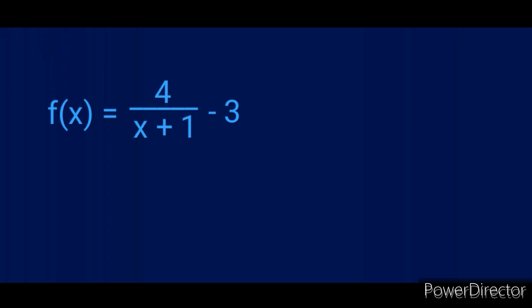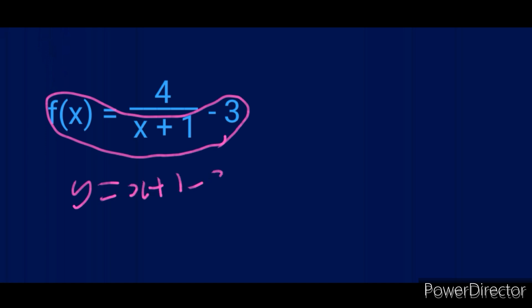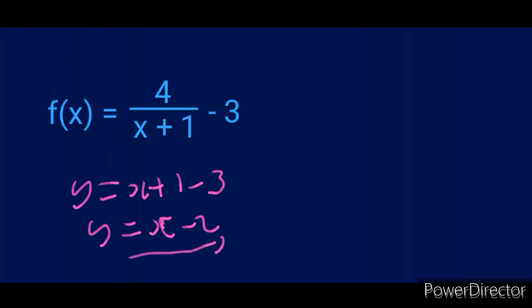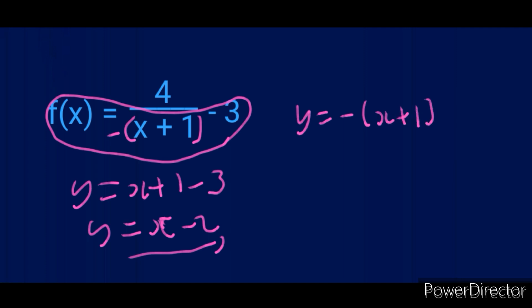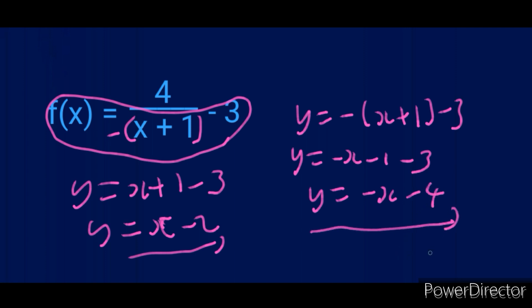Here is another example. They say find the equation of the axis of symmetry — the one with the positive gradient and the one with the negative gradient. For the increasing one, take everything except the numerator: y equals x + 1 - 3, so y equals x - 2. For the decreasing one, put brackets around the denominator with a negative outside: y equals -(x + 1) - 3, giving y equals -x - 1 - 3, so y equals -x - 4.